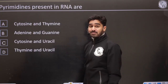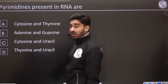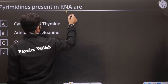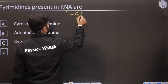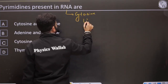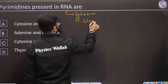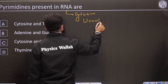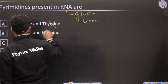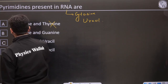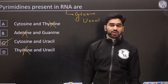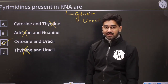Pyrimidines present in RNA: for RNA, we get cytosine and uracil. Thymine is not present in RNA, and adenine is not a pyrimidine. So option C is correct — cytosine and uracil.